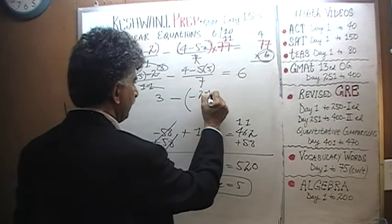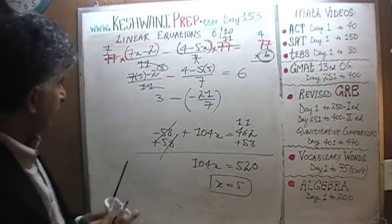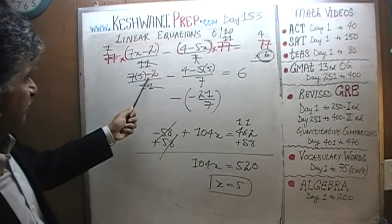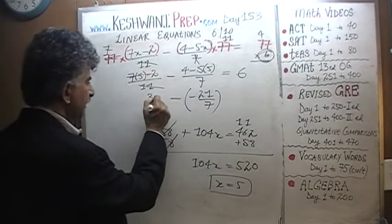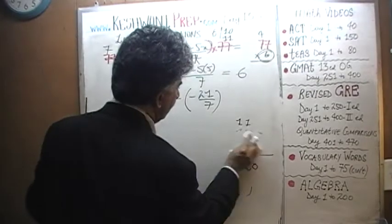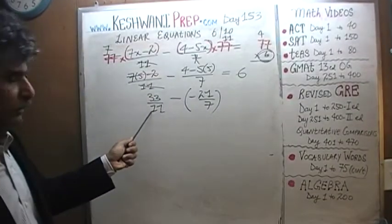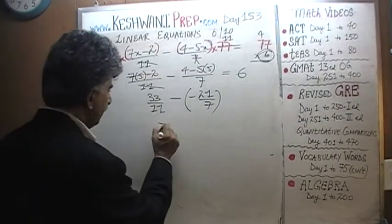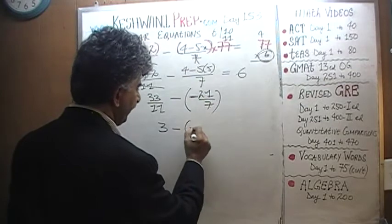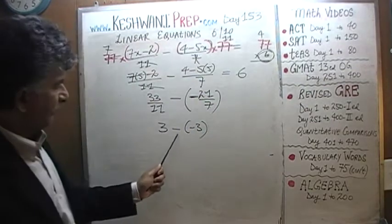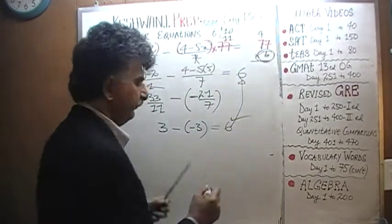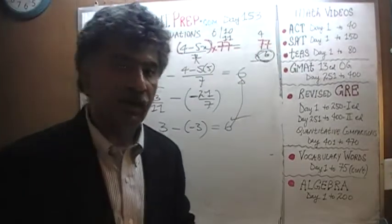Perhaps I should work it out here: negative 21 over 7. And this quantity was 33 over 11. 33 divided by 11 is 3. And here we have minus negative 21 divided by 7. Negative 21 divided by 7 is negative 3. 3 minus a negative 3 is 6 — just like it was supposed to be. Which means our answer is correct.